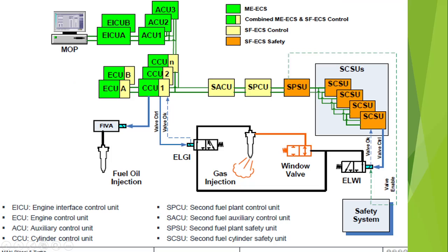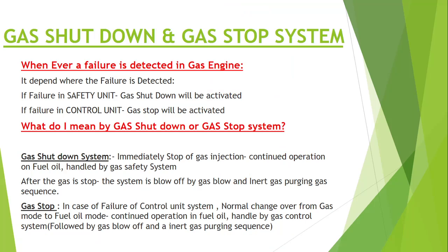In gas stop, if there is a problem with the gas injection, a normal changeover from gas to fuel oil injection takes place, and it takes place with a time period — slowly ramping over from gas to fuel oil. But in gas shutdown, the whole system is immediately stopped, regardless of whether the fuel injection changeover has completely taken place or not, and therefore the system will bump slightly before coming back up when the fuel oil injection takes position.